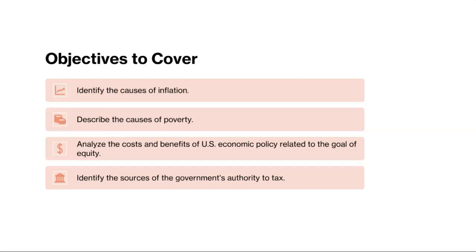Finally, we're going to talk about the sources of government authority to tax. First, constitutional authority — it is enshrined in a country's constitution, granting the government the legal authority to levy taxes for the public good. Second, legislative authority — power is defined and delegated through laws enacted by the legislative branch of government, specifying the types of taxes, rates, and collection procedures. Third, fiscal policy — taxation is a key tool of fiscal policy, allowing the government to raise revenue to fund public services, redistribute wealth, and stabilize the economy.